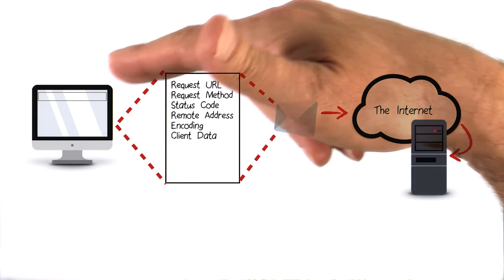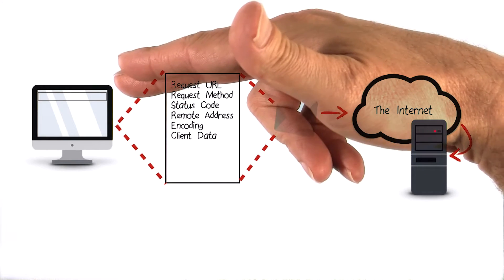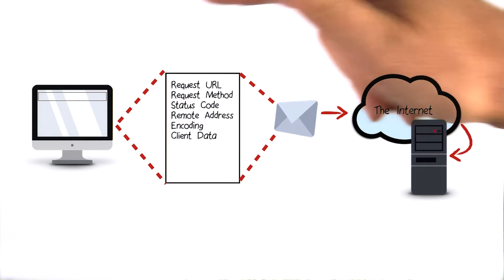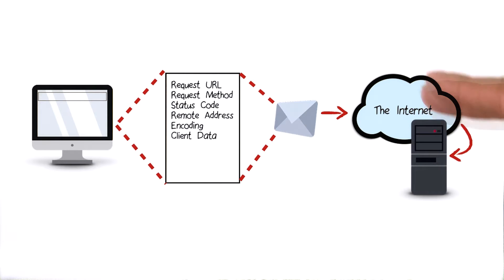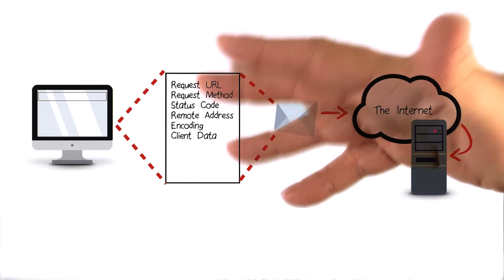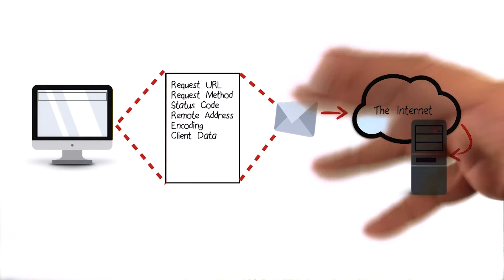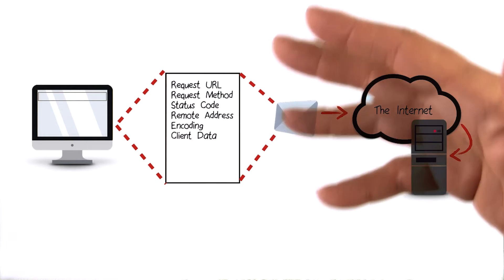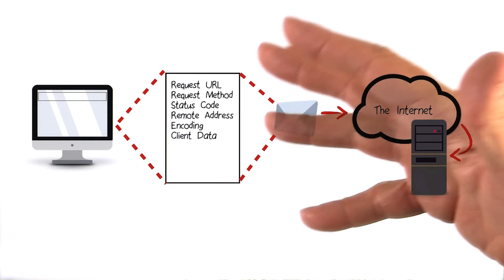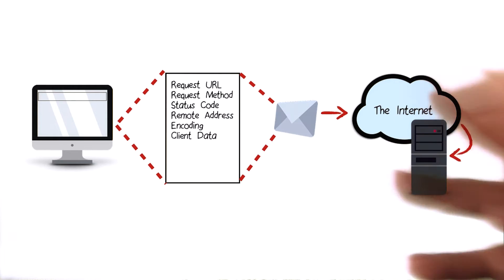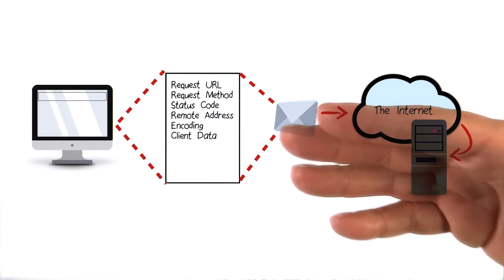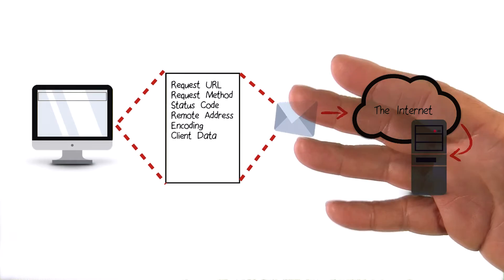For example, when you enter a URL into a web browser, a GET request containing the destination URL is generated and sent to the server. This request also contains a header section which includes metadata about the request. This includes things like what types of languages and encodings the client can accept, and information about the client such as the operating system and screen dimensions. Mobile apps do the exact same thing when they're requesting information from a server.